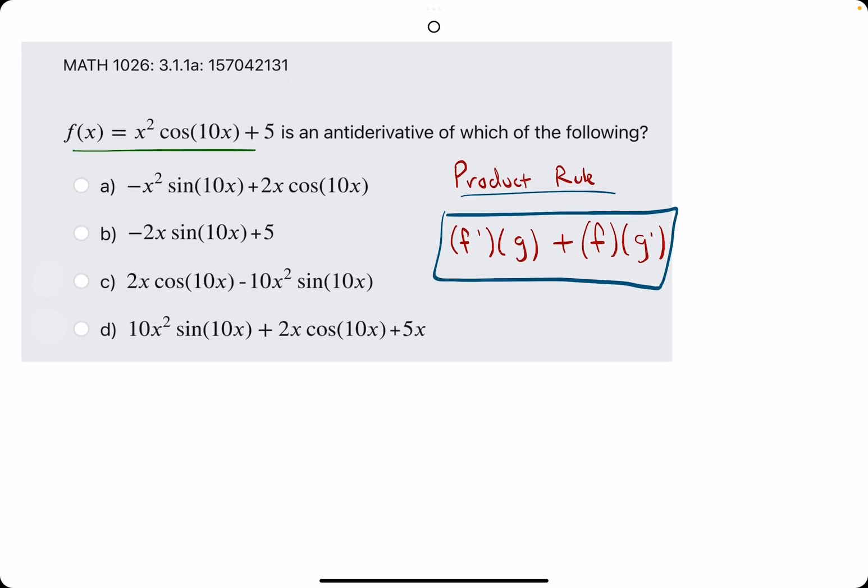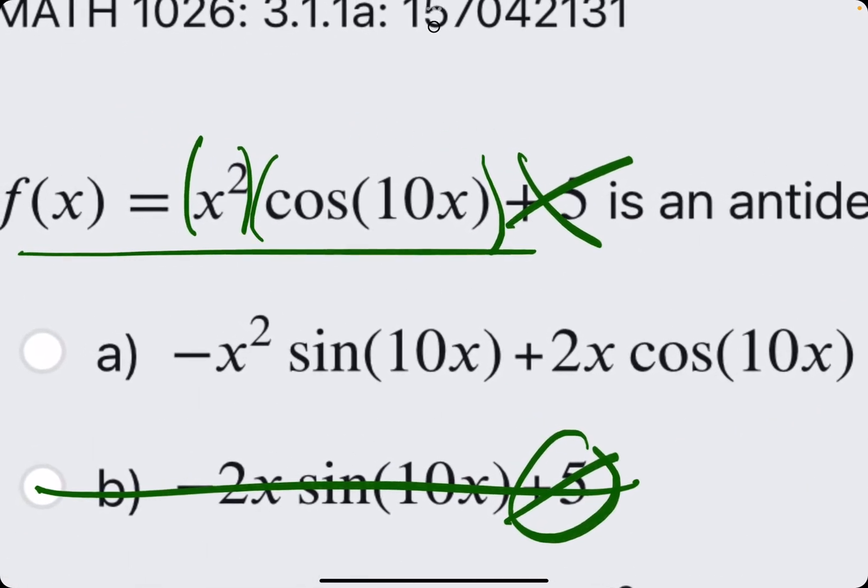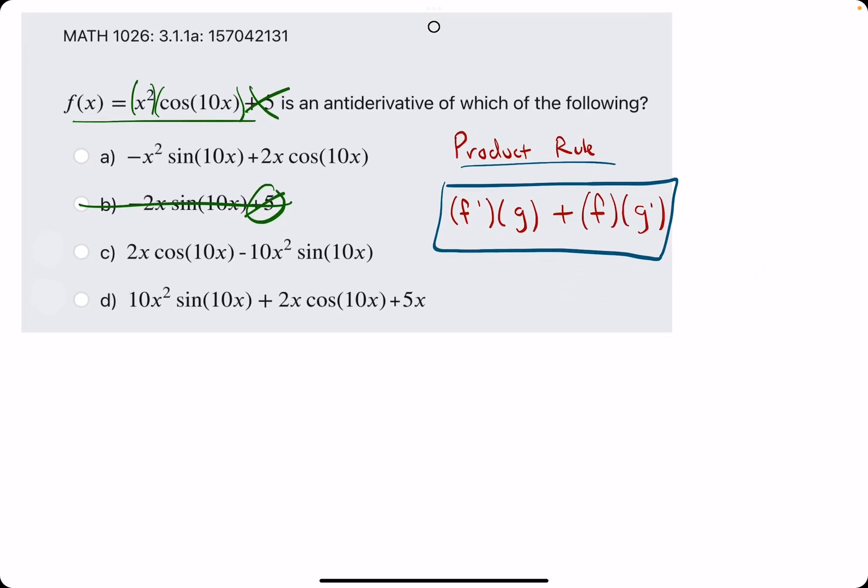Starting with the plus 5, if we take the derivative of plus 5, or any constant for that matter, it'll go to 0, so it won't play a role in our answer. What we're mainly focused on is the derivative of x squared times cosine of 10x. We have two x terms being multiplied together, which means we need to use the product rule.